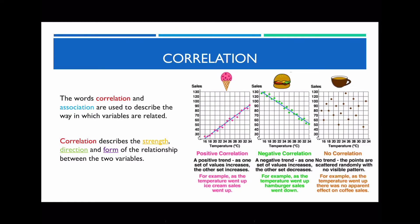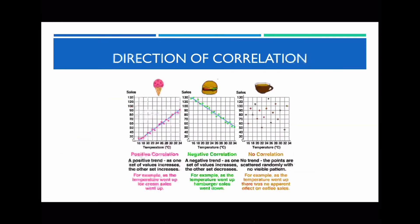When discussing the correlation between two variables, there are three main criteria you need to address: strength, direction, and form. When talking about direction, it's going to be positive, negative, or no correlation at all. A positive correlation means that when you increase in the x variable, your y variable also increases. A negative correlation is when you increase along your x-axis, your y values keep decreasing. No correlation is where it doesn't go up or down — it's just random, with no trend at all.